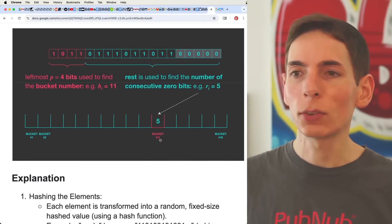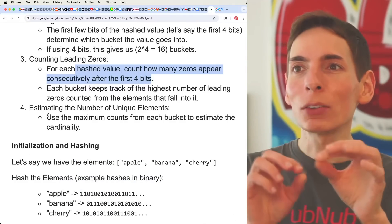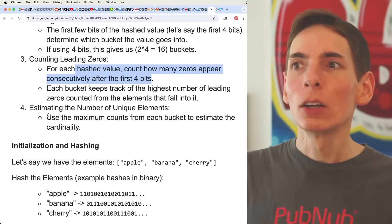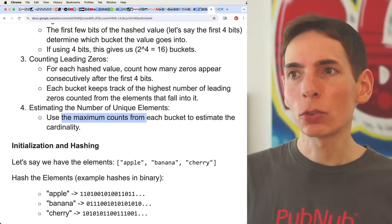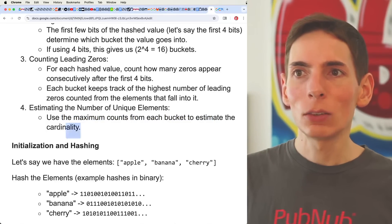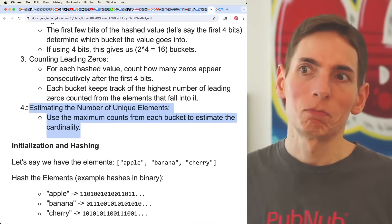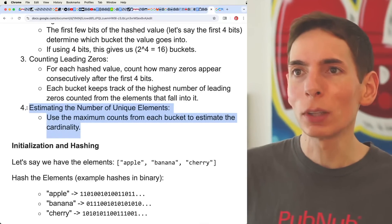And then when we want to say how many elements are in there, we just estimate the number of unique elements by using the max counts from each of the buckets. And then we basically average them. That's it, that's really it. It's a really simple algorithm.